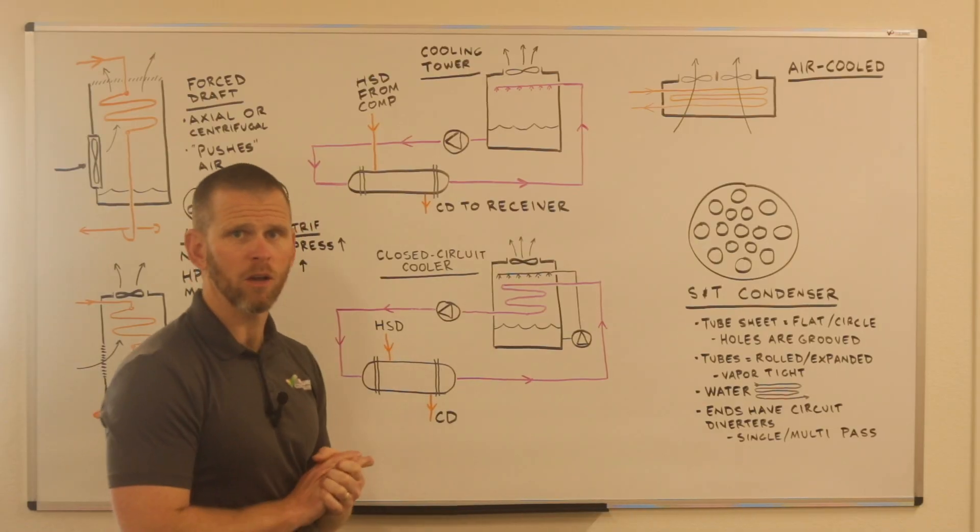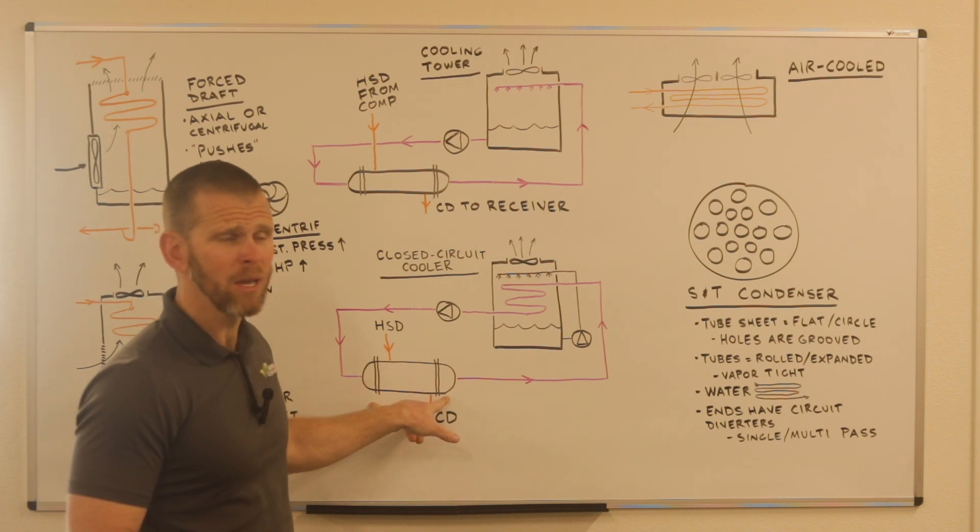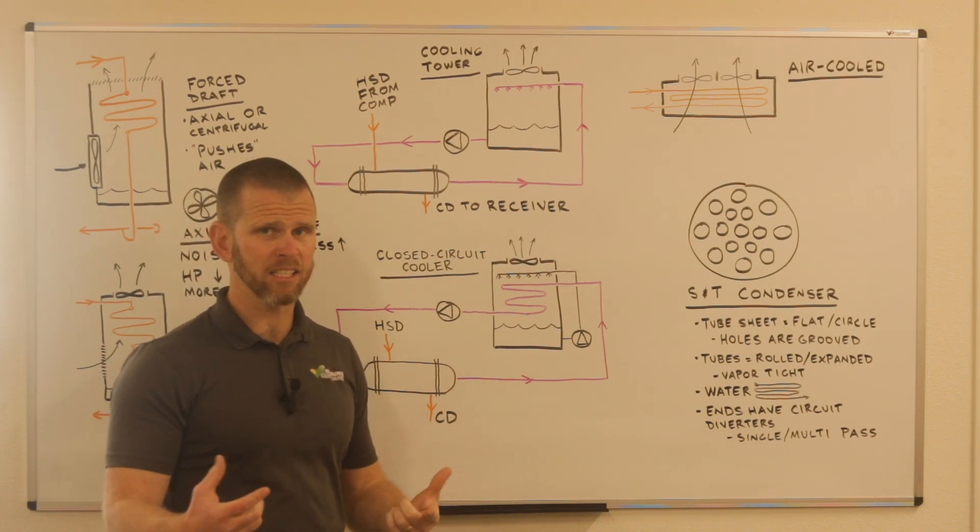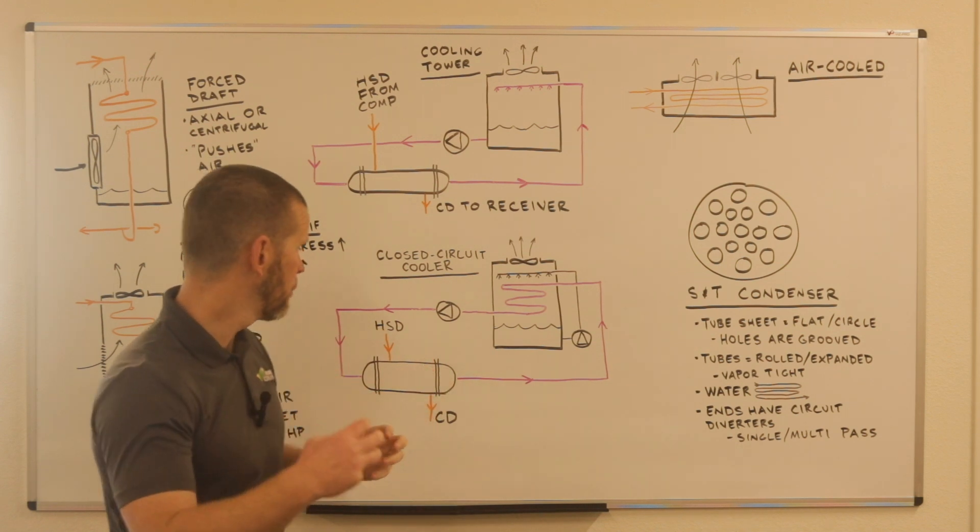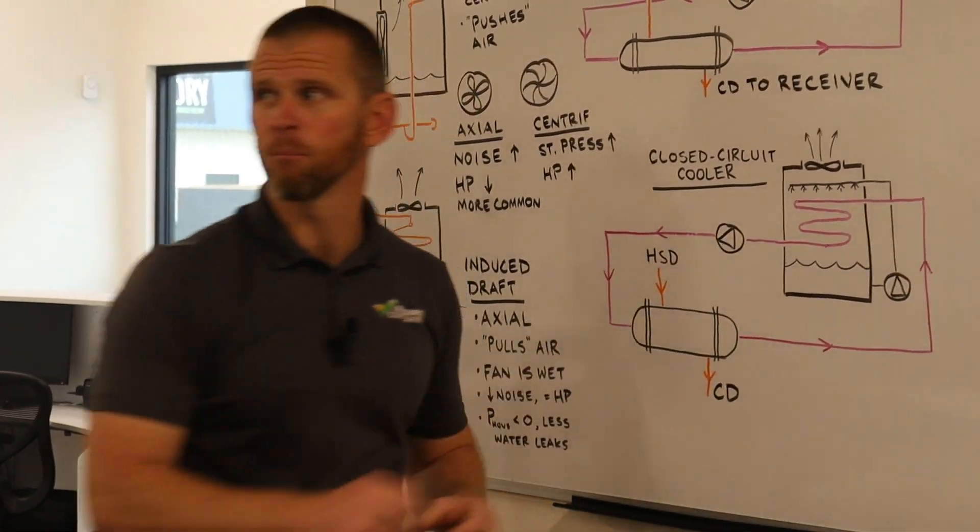One thing to keep in mind about shell and tube condensers is maintenance on them can be a bit challenging. These are heat exchangers. Usually they do have access points, like those heads can be removed. But if you want to picture unbolting this head and pointing it off when you need to get to the bundle.